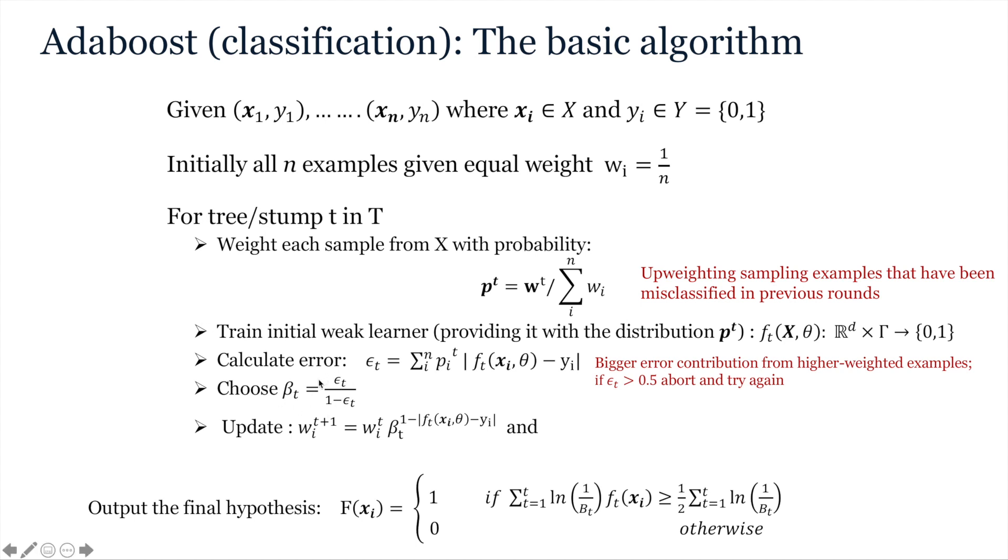Next, this error is turned into a beta value, where error is not allowed to dip below 0.5 or 50% accuracy, which makes sense, because if a weak learner is performing worse than random chance, then it needs to be aborted. So, in this case, the tree or stump is reset, and a different weak learner is fit, and doing this then means that this beta is bound between 0 and 1, with smaller beta corresponding to smaller error.